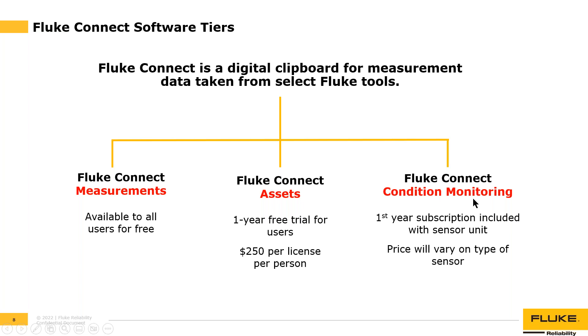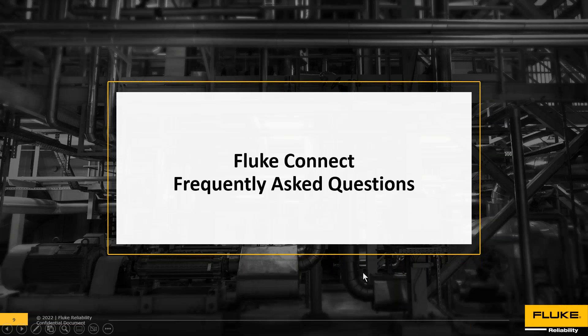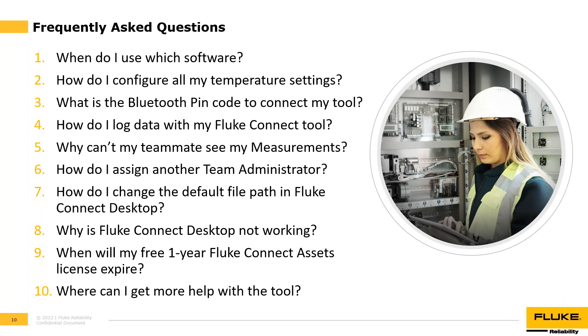The third and final tier is the Fluke Connect condition monitoring tier. This tier includes the first year of the software subscription with the purchase of a sensor or hardware, and includes all features available in both the measurements tier and the assets tier. That concludes the overview portion. The next section covers the Fluke Connect Frequently Asked Questions.